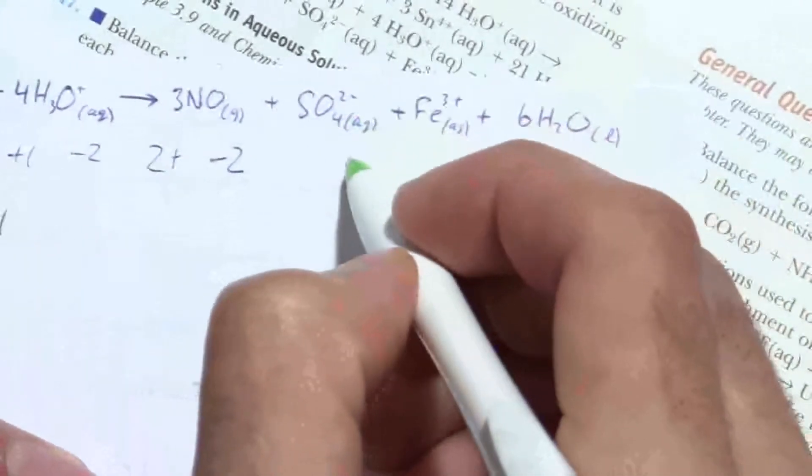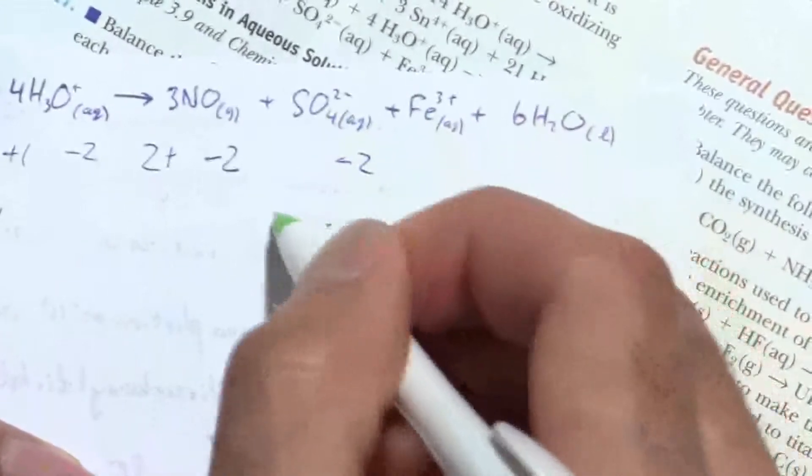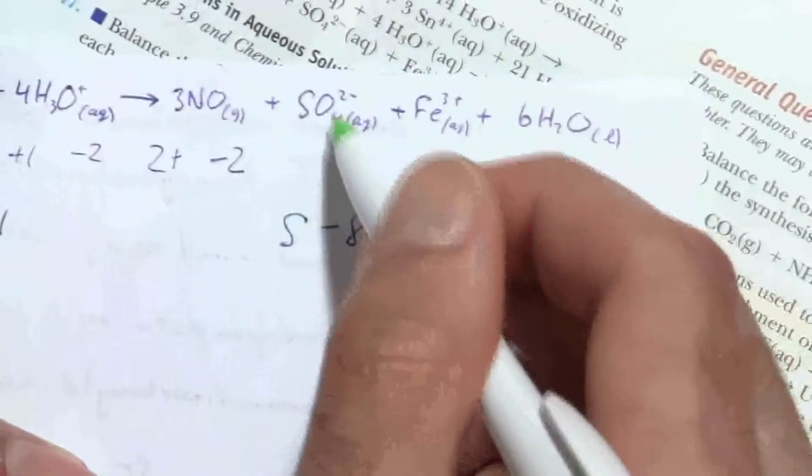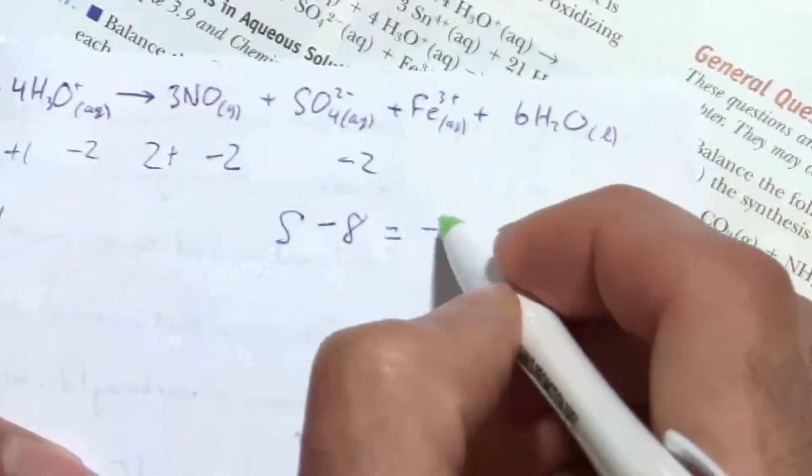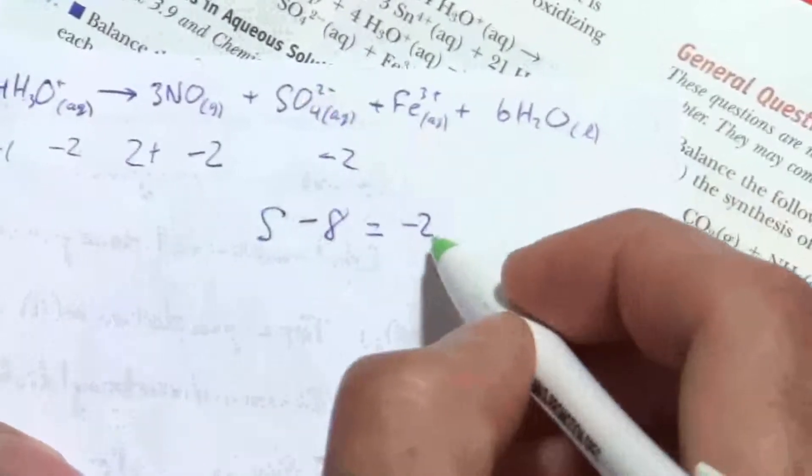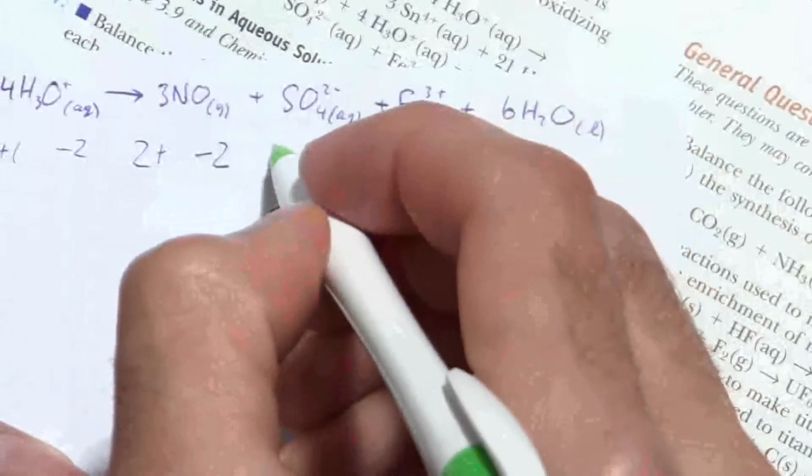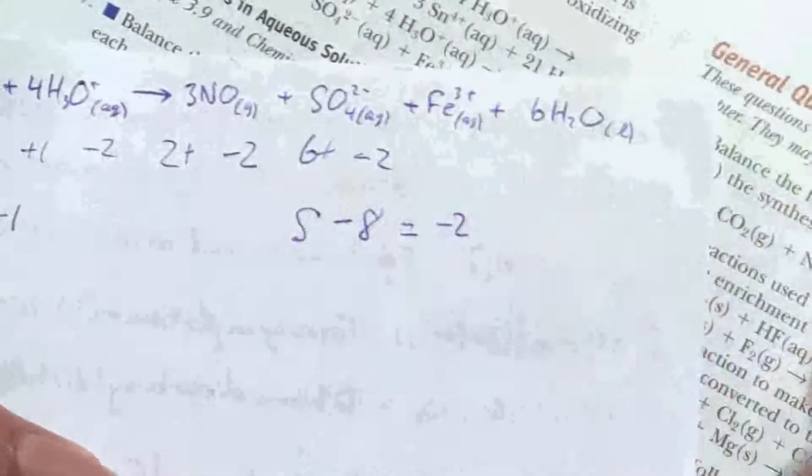Here, oxygen, negative two. That's my rule. I have four of them. So S minus eight, for my four times the negative two, equals that charge of negative two. So my sulfur must be six, or positive six.